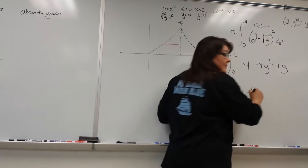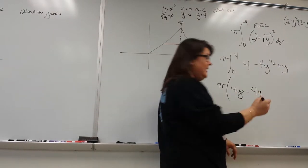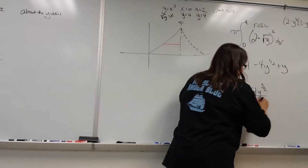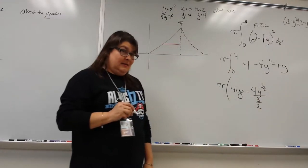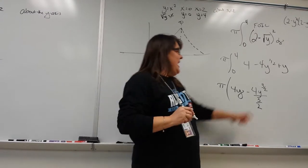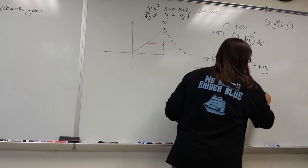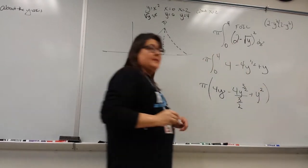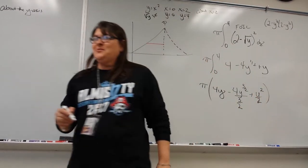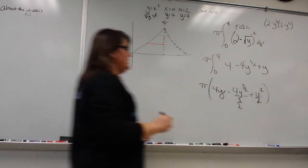Minus 4y — can you get the answer? 4y to the three-halves over three-halves, which is two-thirds times four, so that would be eight-thirds y to the three-halves. Perfect. And then what's the next one? Y squared over two. Integration is done.